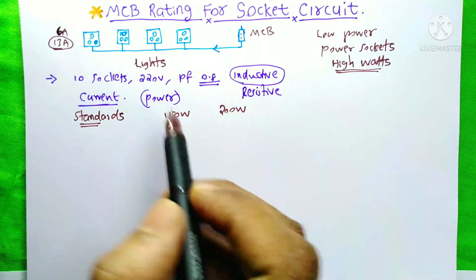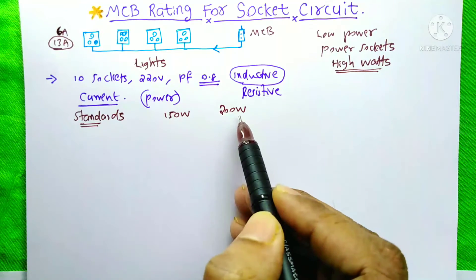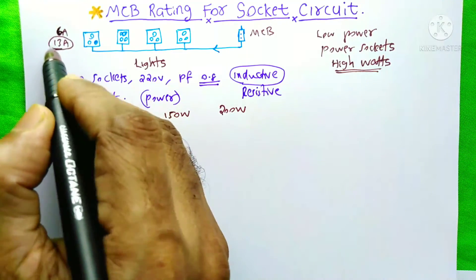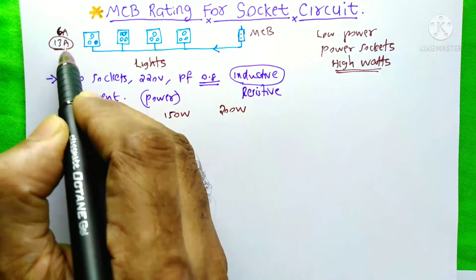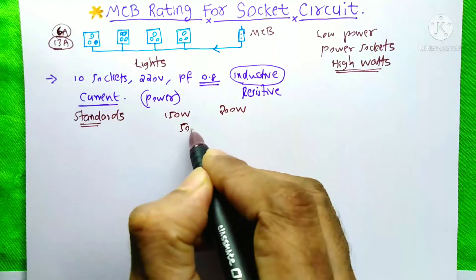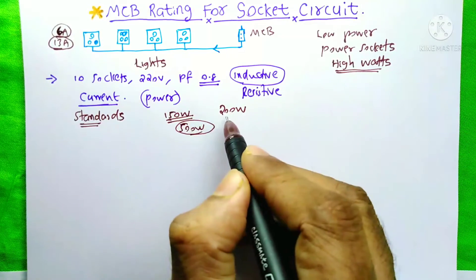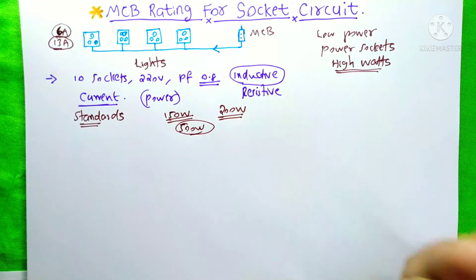Now you might be thinking that you could connect more power than these 150 or 200 watts on these sockets. Because its ampere rating is 6A and 13A. Even if it is 6A, you can connect more than 500 watts. For example. Right? But here they allow only 150 or 200 watts. Why it is so?